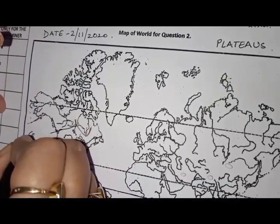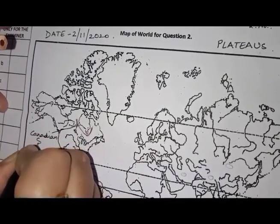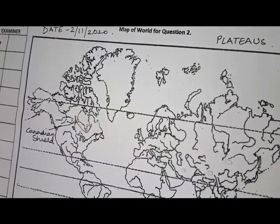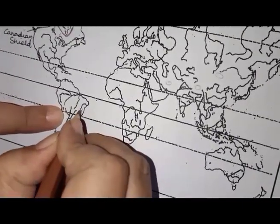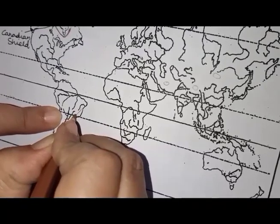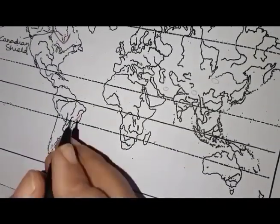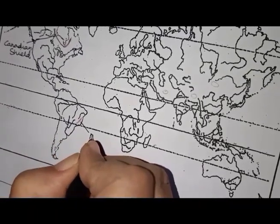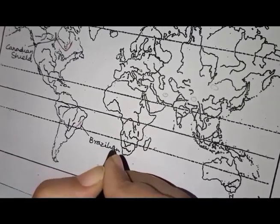Label it as Canadian Shield. The next one is the Brazilian Highlands. Now this is the Tropic of Capricorn. You'll draw it like a slanting line like this, and it should not touch the river. Label it as the Brazilian Highlands.